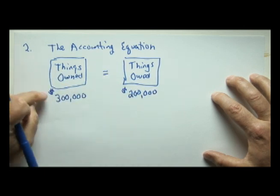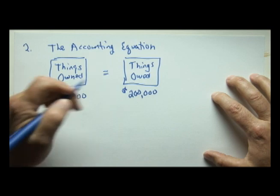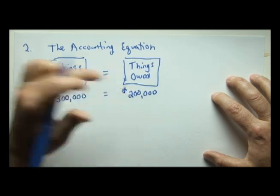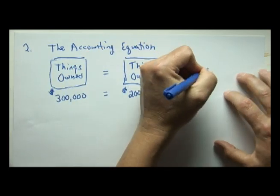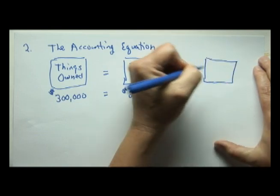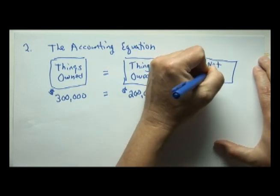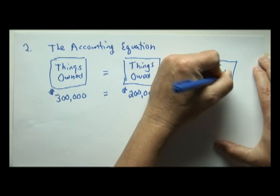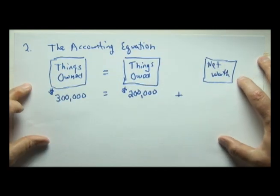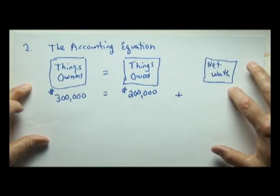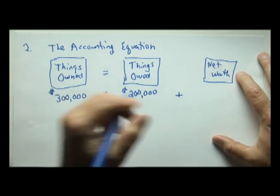If a homeowner owns a house worth $300,000 and it has a mortgage or a debt on that house, the equity in this house, or the net worth that the owner has in the house, is called equity. A fancy name for net worth is called equity.